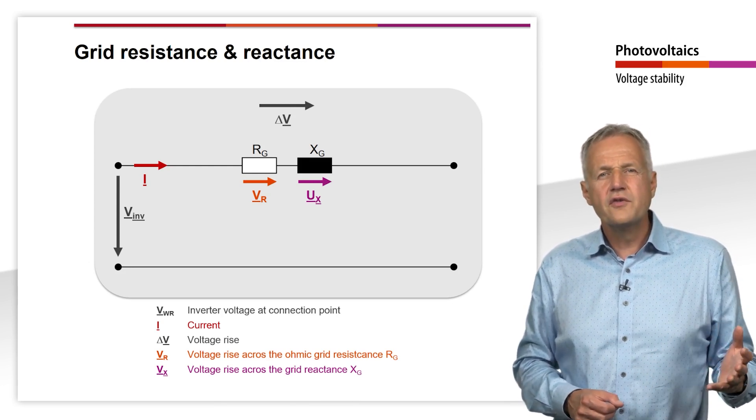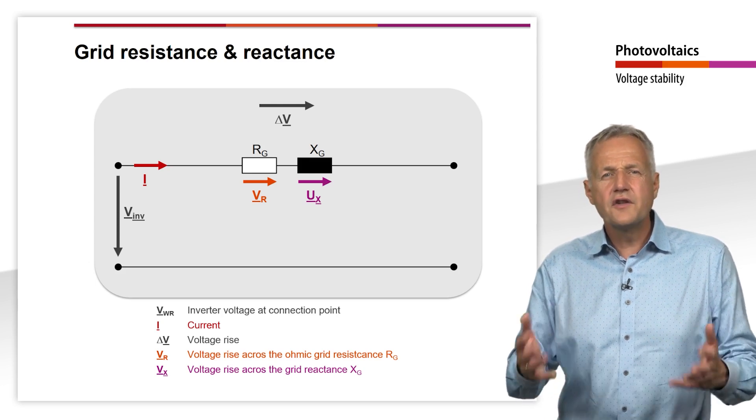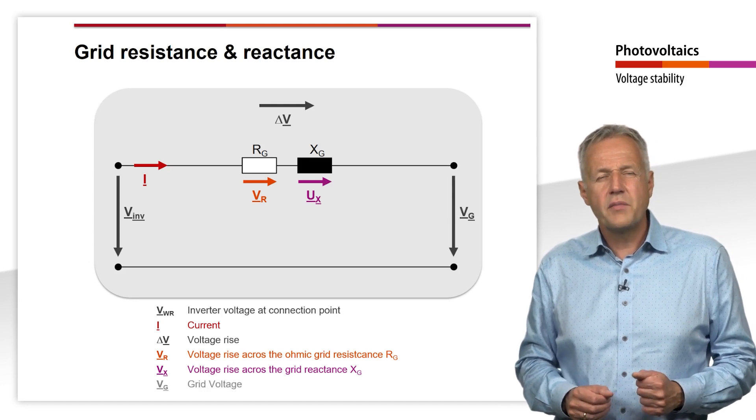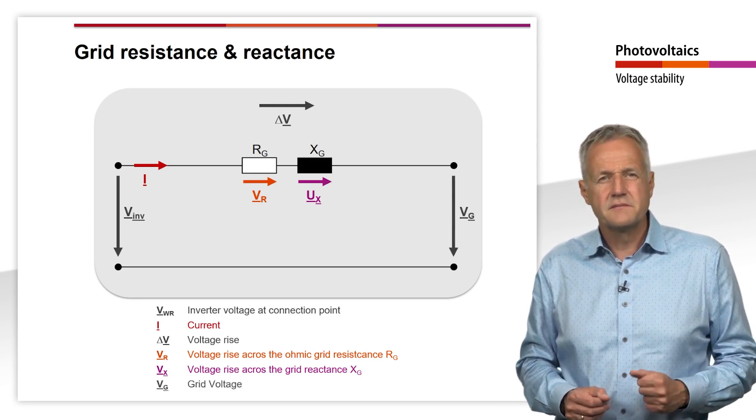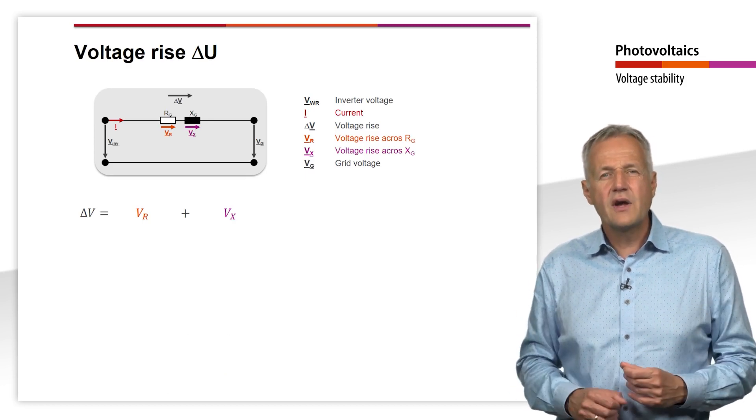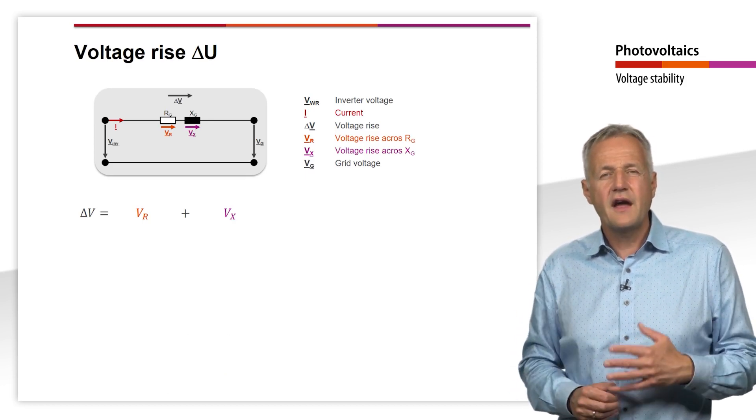From the point of view of the grid, the voltage of course is increased. The grid voltage is marked here by VG. Thus, to calculate delta V, we only need to calculate VR and VX.